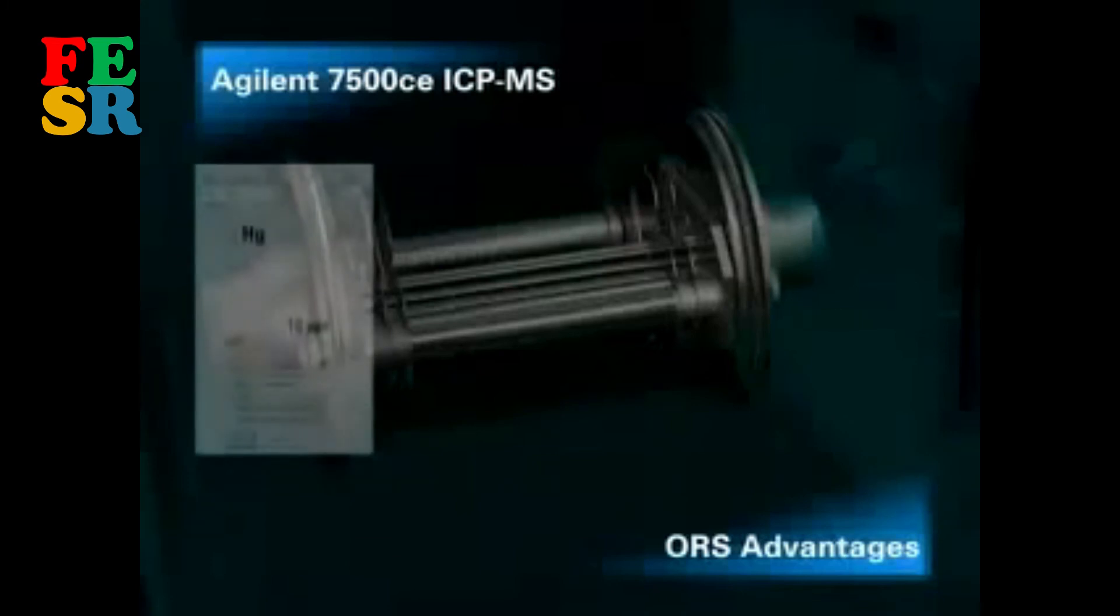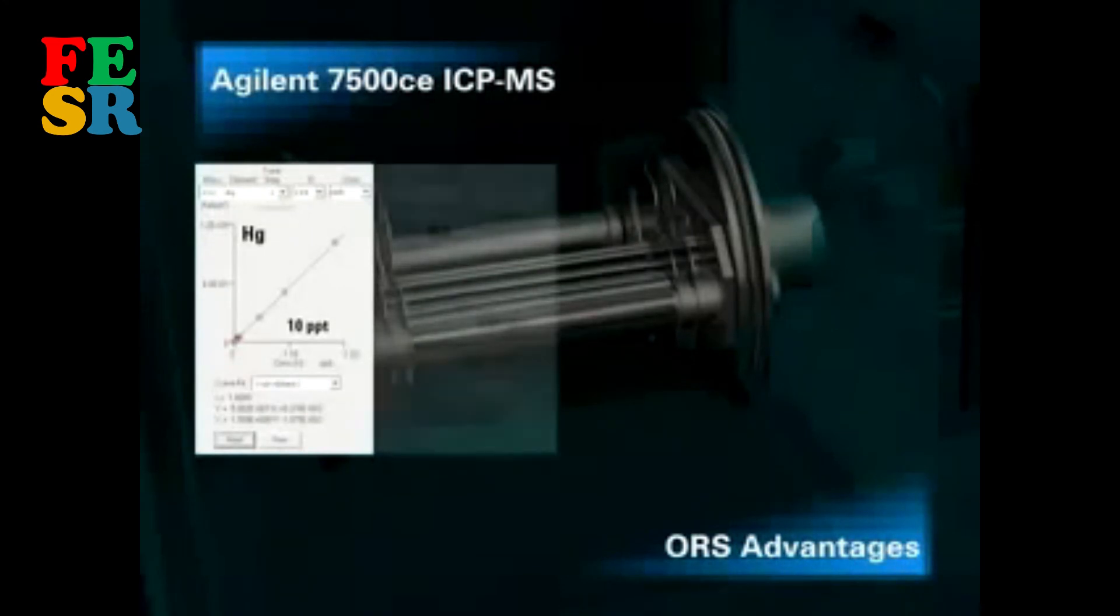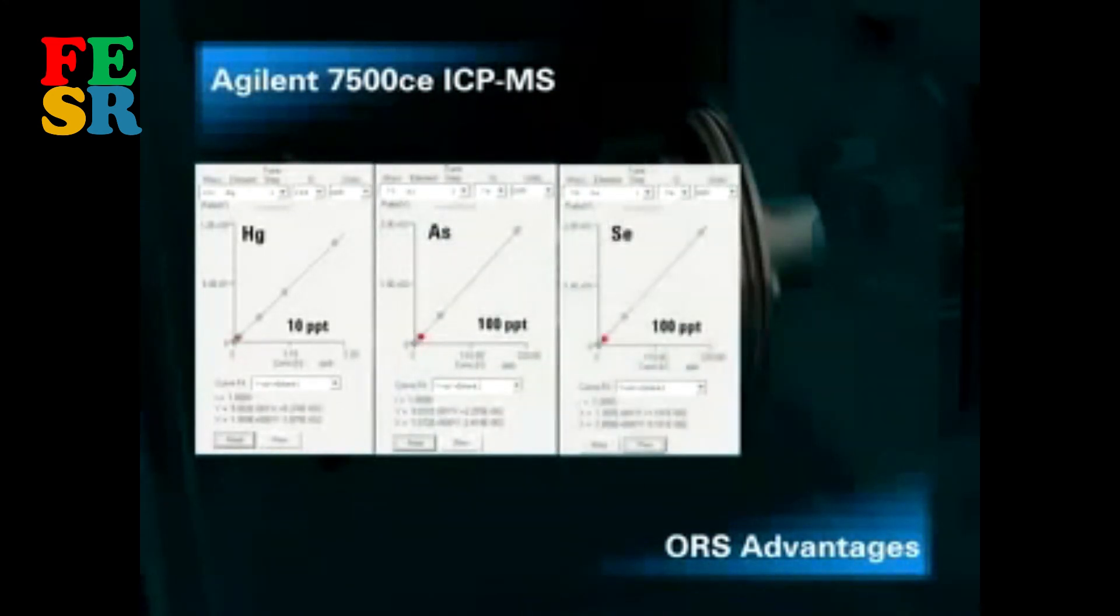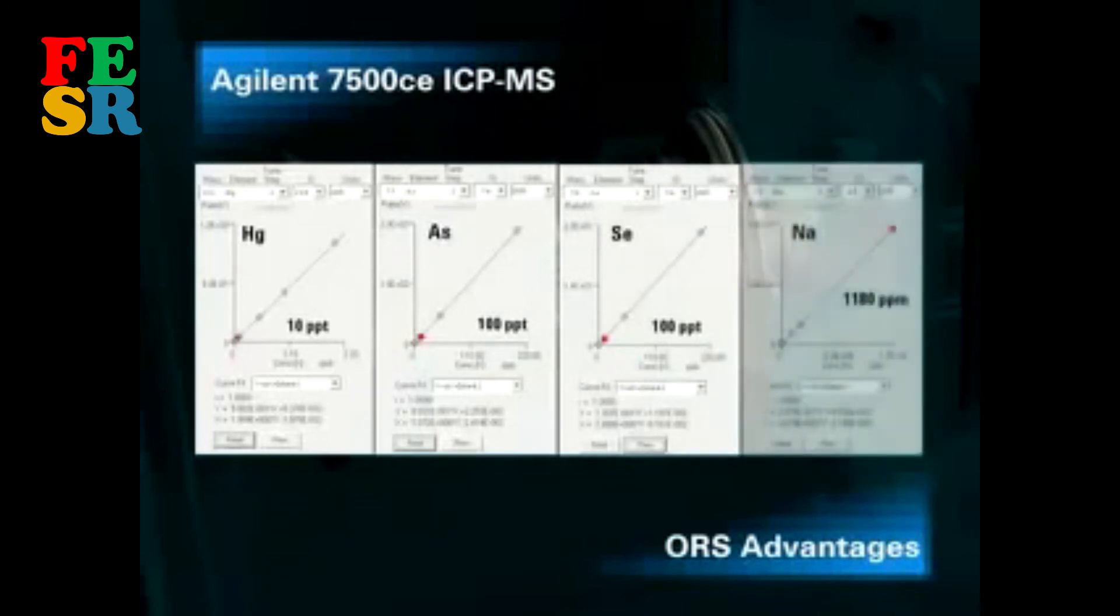The calibration graphs show excellent linearity for mercury down to the 10 parts-per-trillion level, arsenic and selenium down to 100 parts-per-trillion, and sodium at 1,180 parts-per-million, all achieved in the same run.